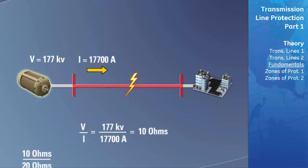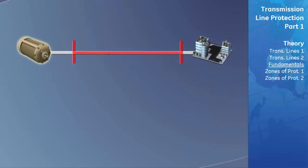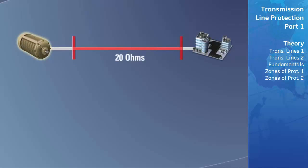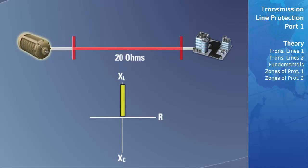In this example, the current increased as a result of the reduction in impedance from 20 to 10 ohms, indicating that the fault occurred at a distance of 50% from the measurement point to the end of the transmission line. The impedance of the line is often drawn on an RX diagram. The x-axis represents the resistive component of the impedance. The y-axis represents the inductive component in the positive direction, and the capacitive component in the negative direction.